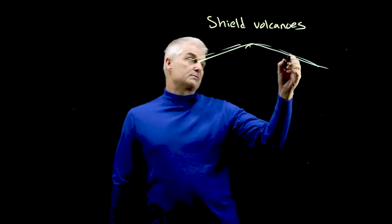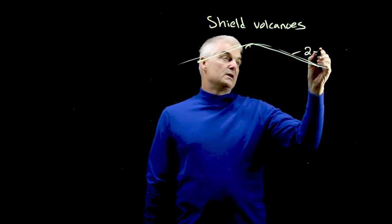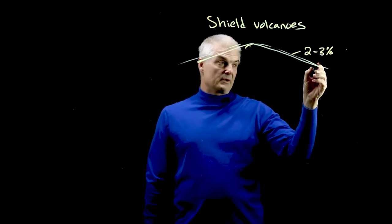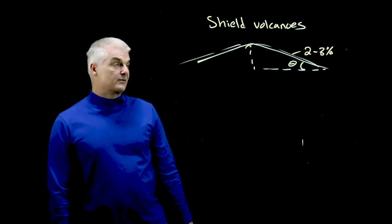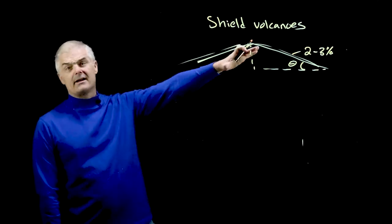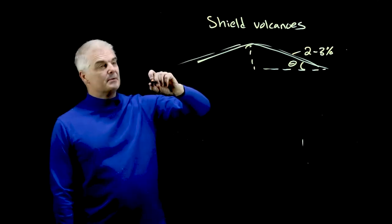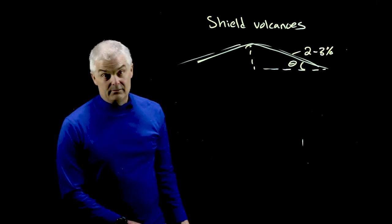By the way, the slope of this, make a note here, the slope is between two to three degrees. If you were to measure the slope, remember this in geometry class, it'd be easy to hike this mountain if it didn't have lava flows because it would not be a very steep climb.